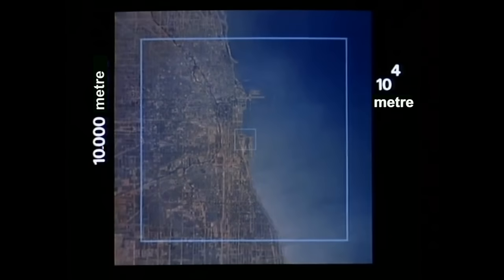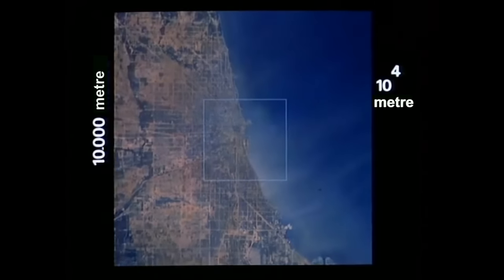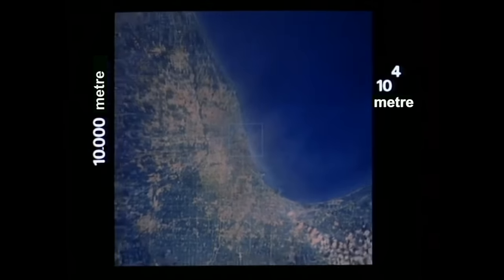Onun dördüncü kuvveti, on kilometre. Bir süpersonik uçak bu mesafeyi on saniyede alabiliyor. İlk önce Michigan Gölü'nün kenarını görüyoruz, daha sonra büyük gölün tamamını.